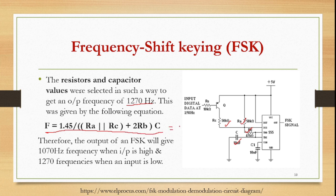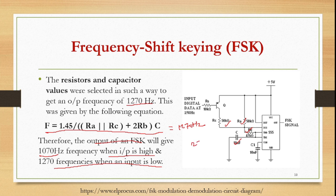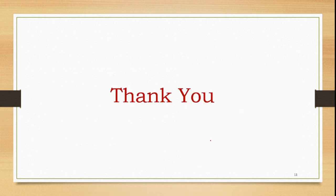The FSK output will be 1070 Hz when the input is logic 0 (space frequency) and 1270 Hz when the input is logic 1 (mark frequency). This is how Frequency Shift Keying is achieved, generating 1270 Hz and 1070 Hz. Thank you for listening. Please subscribe to my channel for more videos.